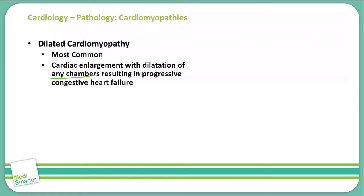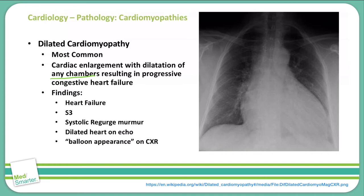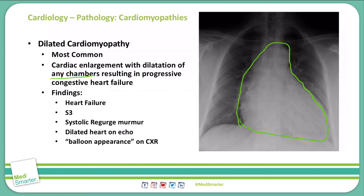Patients with dilated cardiomyopathy present with heart failure, an S3 heart sound that comes after S2 during diastole, a systolic regurgitation murmur, a dilated heart on echocardiogram, and a balloon appearance on chest x-ray. On the chest x-ray shown here, the outline of the heart is extremely large because the ventricles are dilated, and a large portion of the chest is taken up by the enlarged heart.